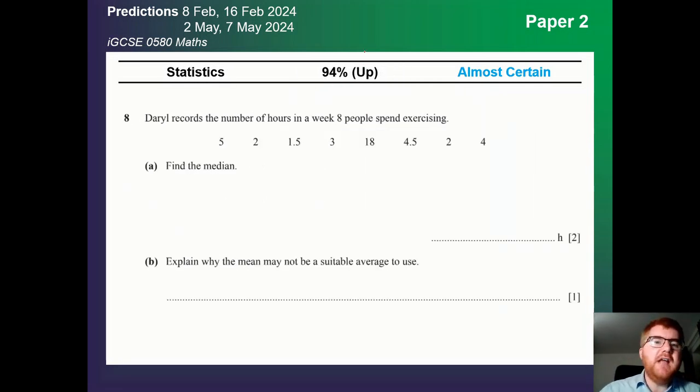On to statistics. 94%. So that's gone up slightly from last year. And these questions can vary quite a bit. Stem and leaf is still popular even in 2023. So keep that in mind. Revise stem and leaf diagrams. But sometimes they'll just ask a standard median and which average to use.